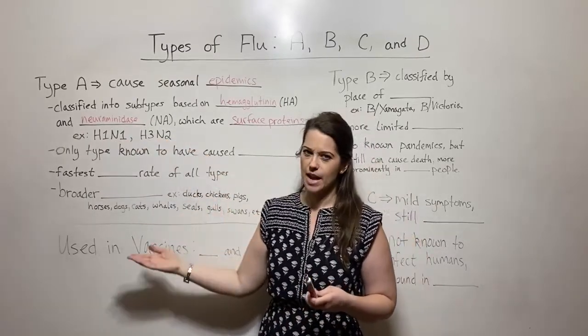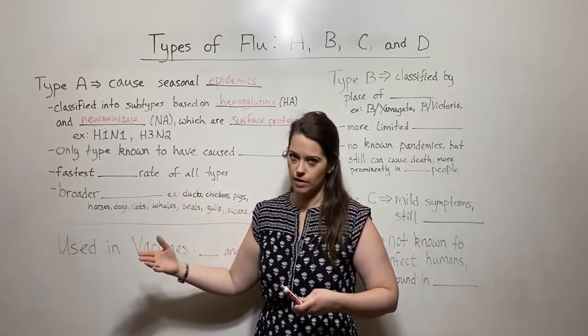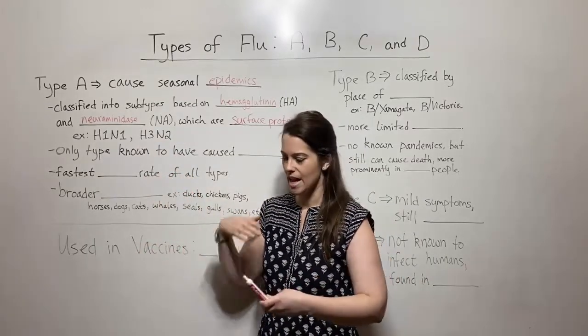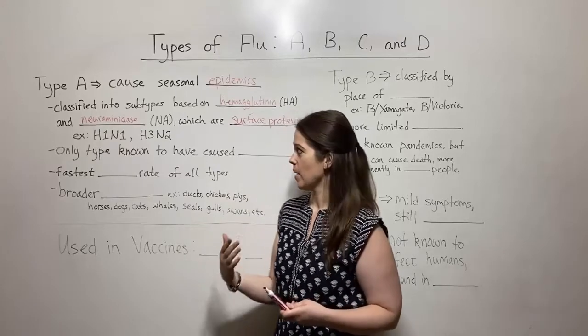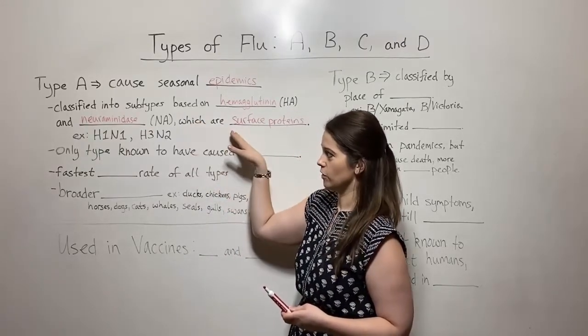And there's many different types. So not just 1, 2, and 3, but you've got many different types of hemagglutinin, many different types of neuraminidase, and they can combine in different ways. And so this is how we classify these based on their surface proteins.